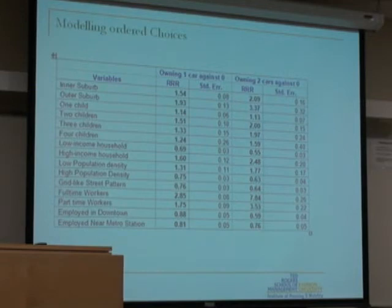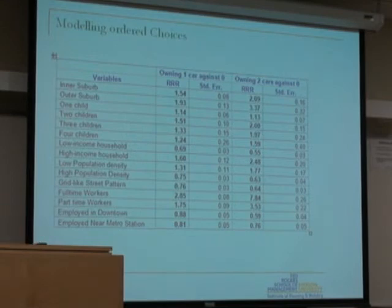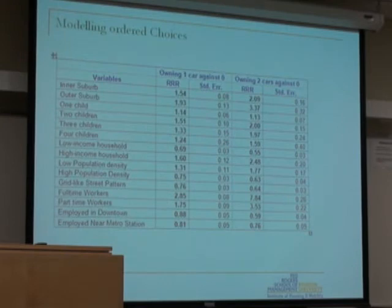The dependent variable is how many cars a household owns, categorized into three groups: zero, meaning the household does not own any car; one, meaning the household owns at least one car; and two, meaning the household owns two or more cars. These three categories — zero, one, and two — form the dependent variable.